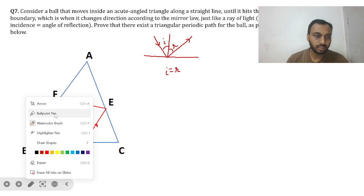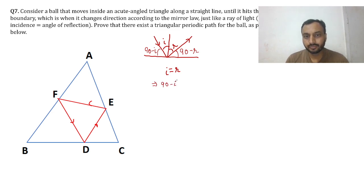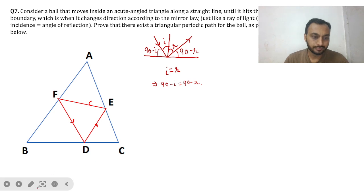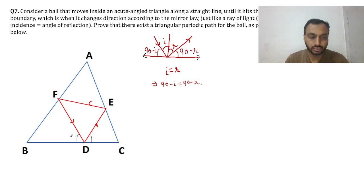Now if I equals R, we can say one more thing. The angle with the mirror surface is 90 minus I and 90 minus R respectively. So if I equals R, then 90 minus I equals 90 minus R. This means the incident ray and the reflected ray make the same angle with the mirror. So in our diagram, I can label these equal angle pairs as X, Y, and Z.